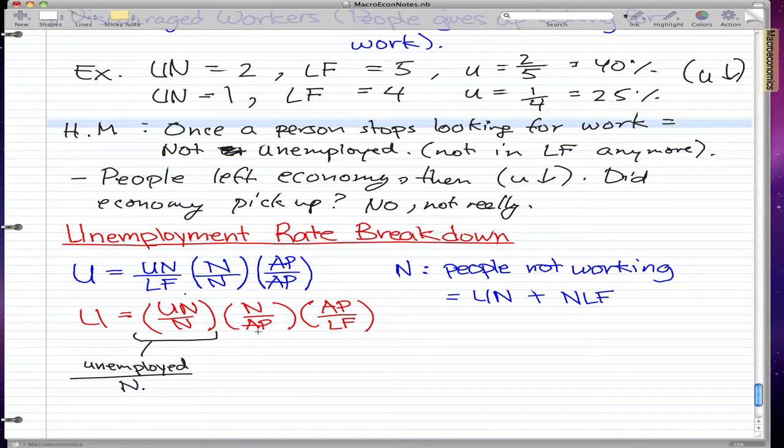And this is the people not working over everybody that is able to work. Remember that AP is the able population, and that is everybody that is able to work.